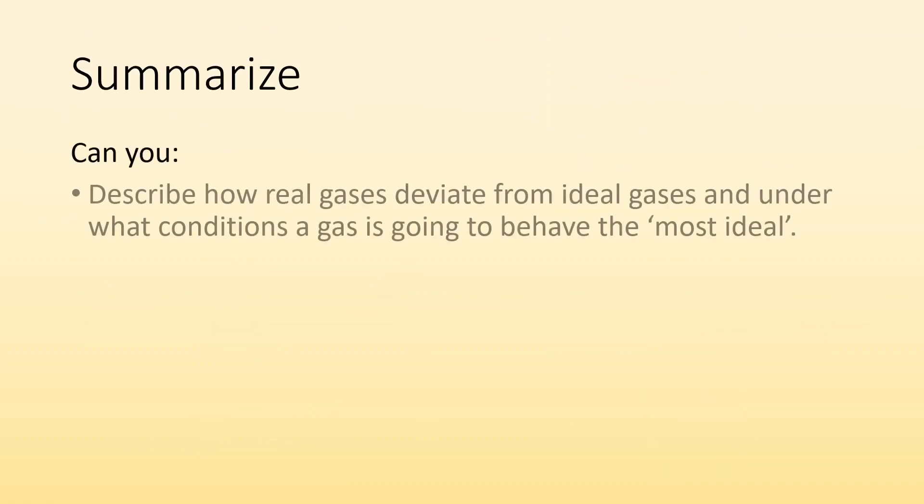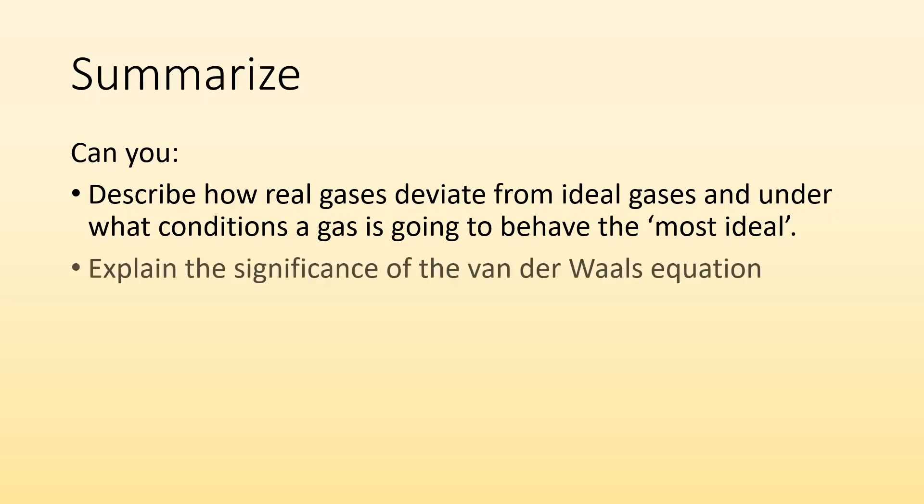So summarize, can you describe how real gases deviate from ideal gases and under what conditions a gas is going to behave the most ideal? Can you explain the significance of the Van der Waals equation? You probably won't do too much math with it. You should be able to do it, but you should most importantly be able to explain the significance of a and b and what they're correcting for real gases. I hope you found that helpful. See you in class.